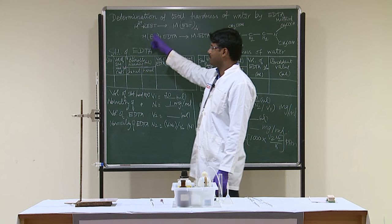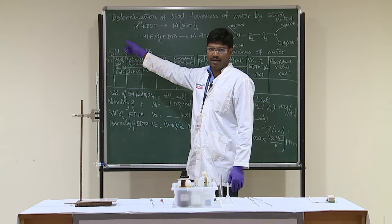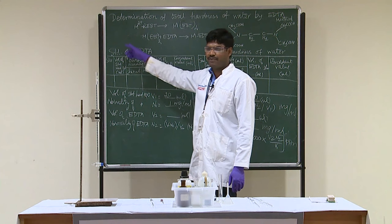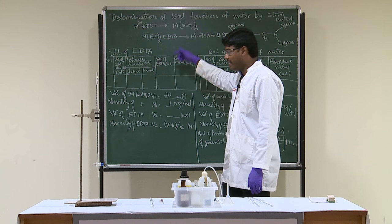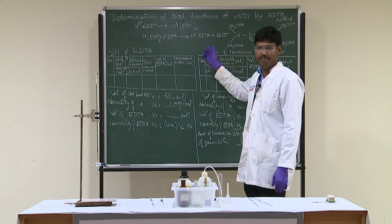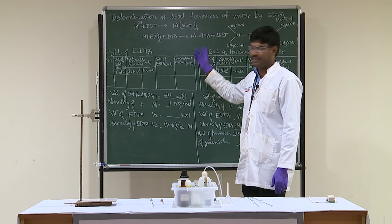Initially, when EBT is complexed with the metal ions, the color will be wine red. Finally, when it is released as free EBT, the color will change to steel blue.